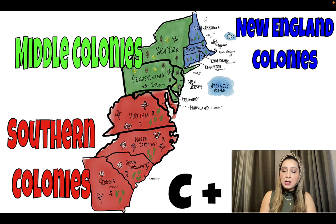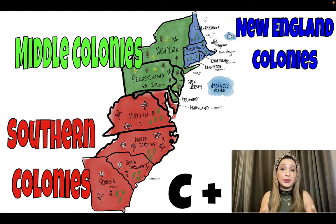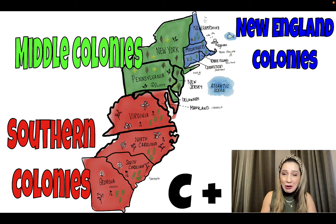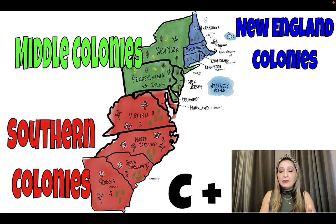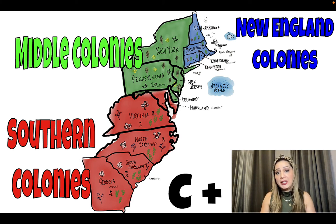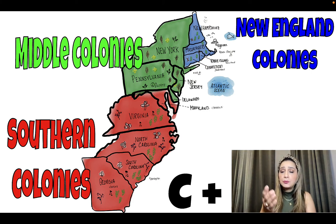The climate plus the geography will determine their economy. So in the New England colonies, cold weather, rocky soil, dense forests, swift rivers, and natural harbors all determined their economy, which included fishing, shipbuilding, whaling, fur trade, and timber. So just keep those things in mind as we move further down.